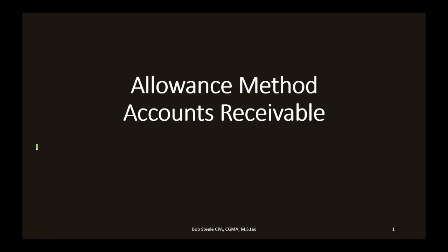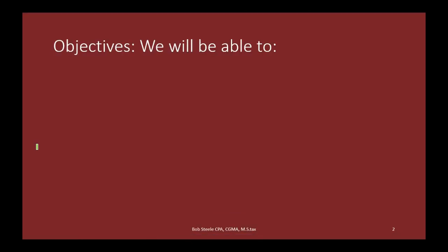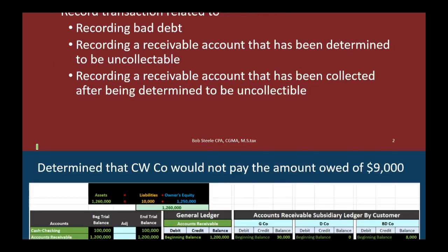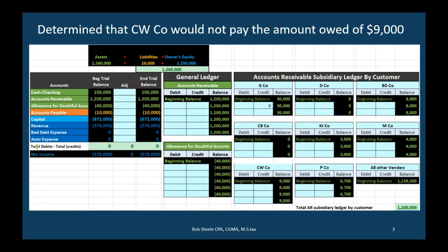In this presentation we're going to take a look at the allowance method, which is related to the accounts receivable account. We will be able to define the allowance method, record transactions related to recording bad debt, recording a receivable account that has been determined to be uncollectible, and recording a receivable account that has been collected after being determined uncollectible. We're going to look at the most common transactions when dealing with the allowance method.